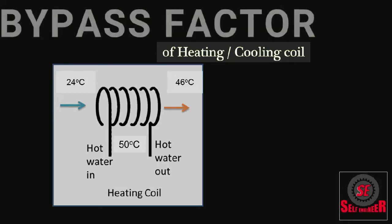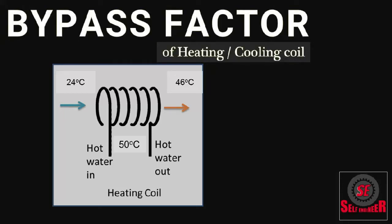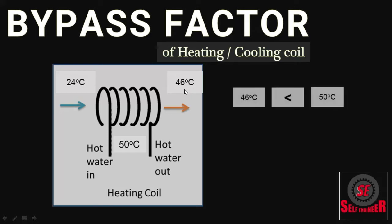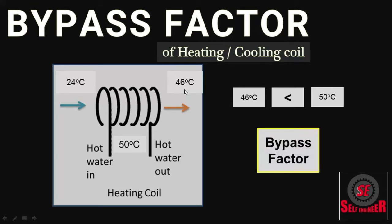Bypass factor of heating or cooling coil. To understand, let us have an example of heating coil in a heat pump. Consider a heating coil with a temperature of 50 degrees Celsius and we are blowing air over the coil at a temperature of 24 degrees Celsius. Then the temperature of air leaving the coil is not 50 degrees Celsius — it is less than 50 degrees Celsius. Why? Because of the bypass factor of the heating coil.